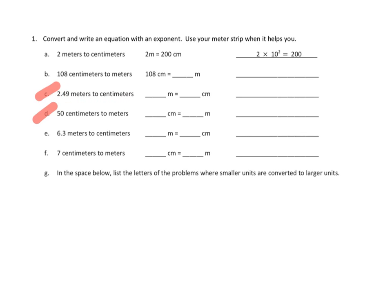2.49 meters to centimeters. We have the same conversion going on here. So we've got to go from 2.49 meters to centimeters. We're going to need to multiply by a hundred, but we're going to express a hundred using exponents, so that's ten to the second power. And if we were to do that calculation — 2.49 times ten to the second — every digit in this number would move two spots to the left, because we are multiplying by ten and by ten again. So instead of two ones, it's going to be two hundreds. Instead of four tenths, it's going to be four tens. And instead of nine hundredths, it's going to be nine ones. That tells us that 2.49 meters is the same as 249 centimeters.